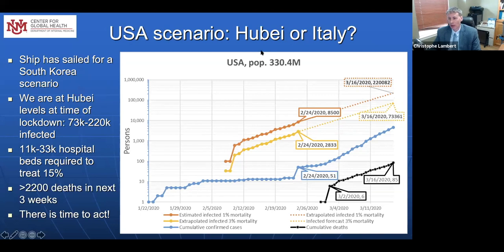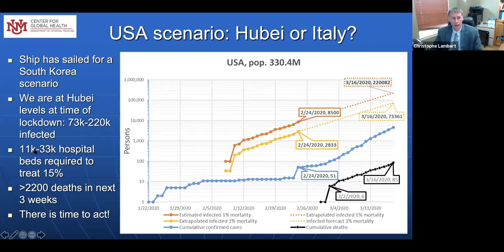So are we going to be more like Hubei or Italy in the US? I think the ship has already sailed for a South Korea scenario. We're actually at the Hubei levels at the time of lockdown — both we and them are in the range of 73,000 to 220,000 infected. Just based on what's already probably in the pipeline here, it's going to require 11,000 to 33,000 hospital beds at 15% hospitalization. You can take 5% of 73,000 to 220,000 to figure out what we might be dealing with in ventilators. And in the US, we will see 2,200 deaths in the next three weeks. However, there is time to act.